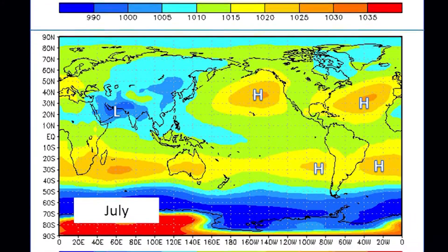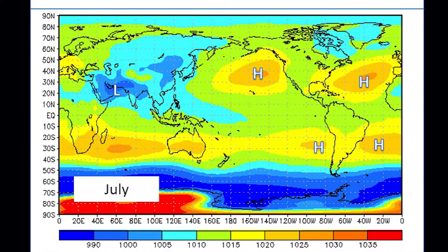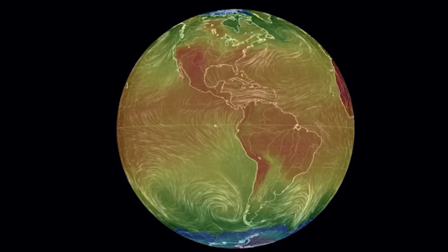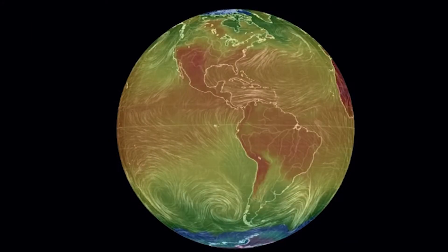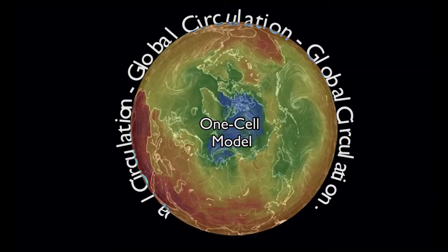The opposite is true in summer, when the surface warming causes the air to expand and form low pressure centers. Over Asia, this seasonal change in surface air pressure drives the monsoon wind system. The difference between land and water and the continentality effect explains much about high and low pressure systems.